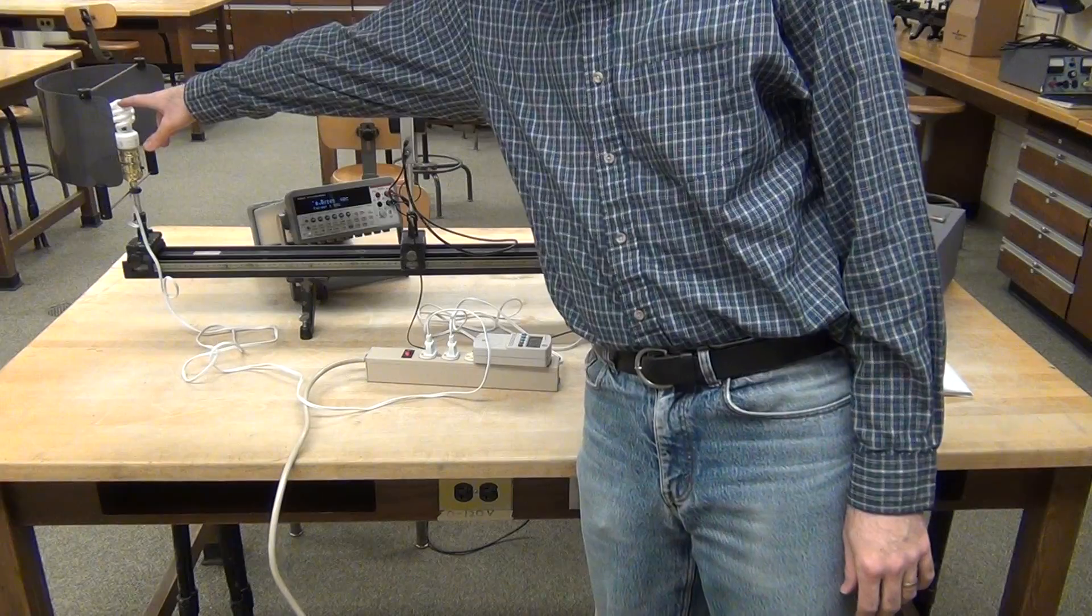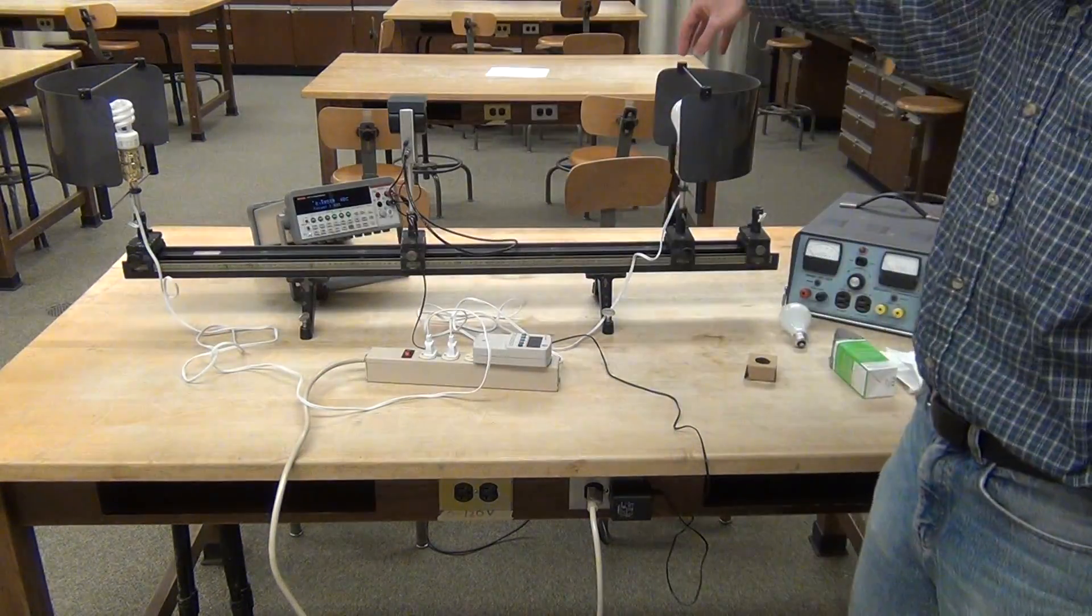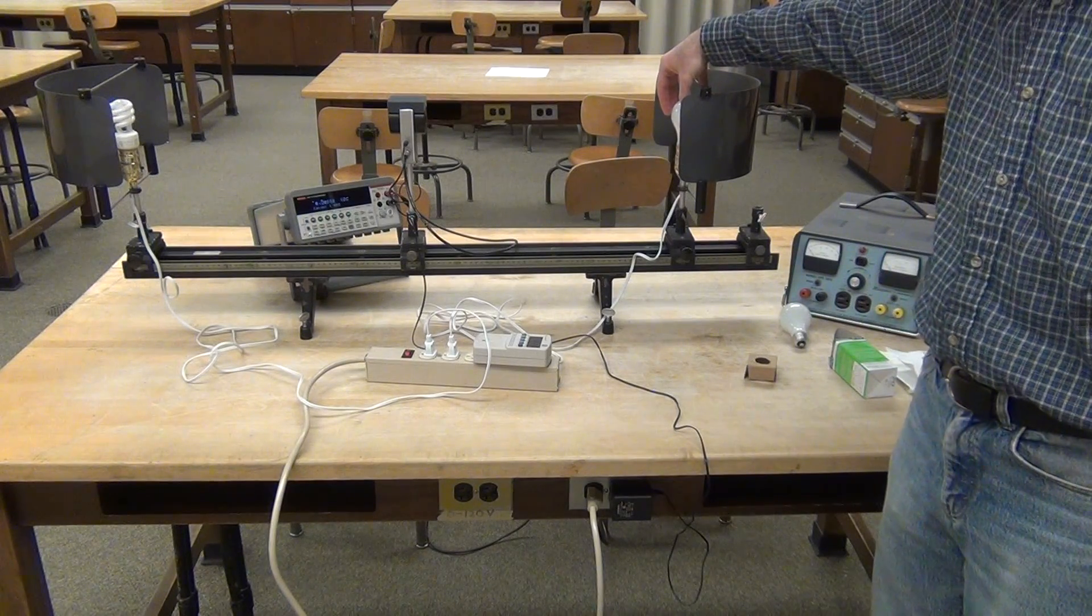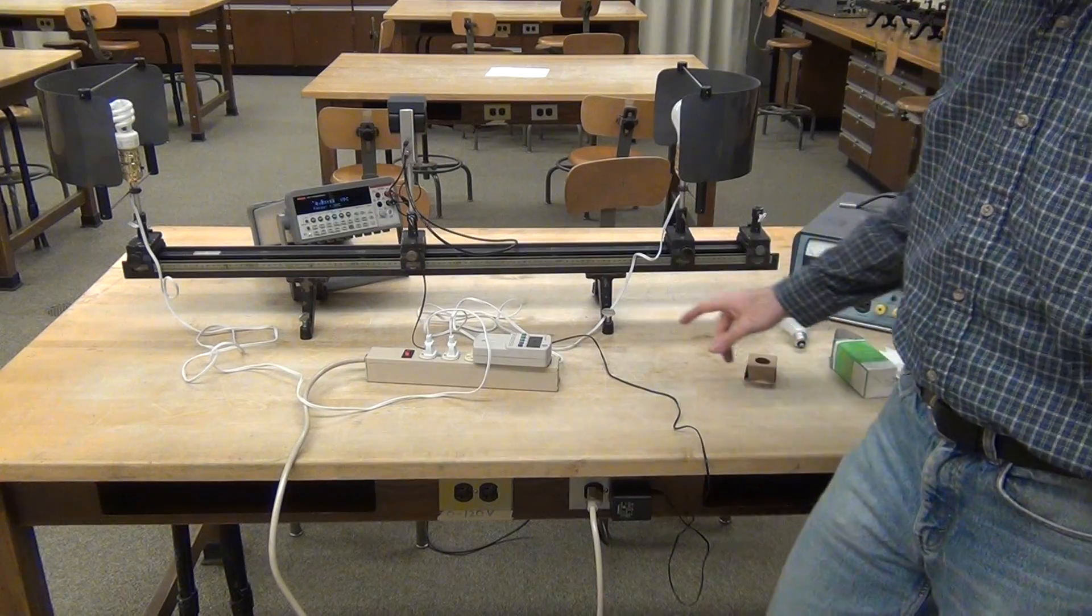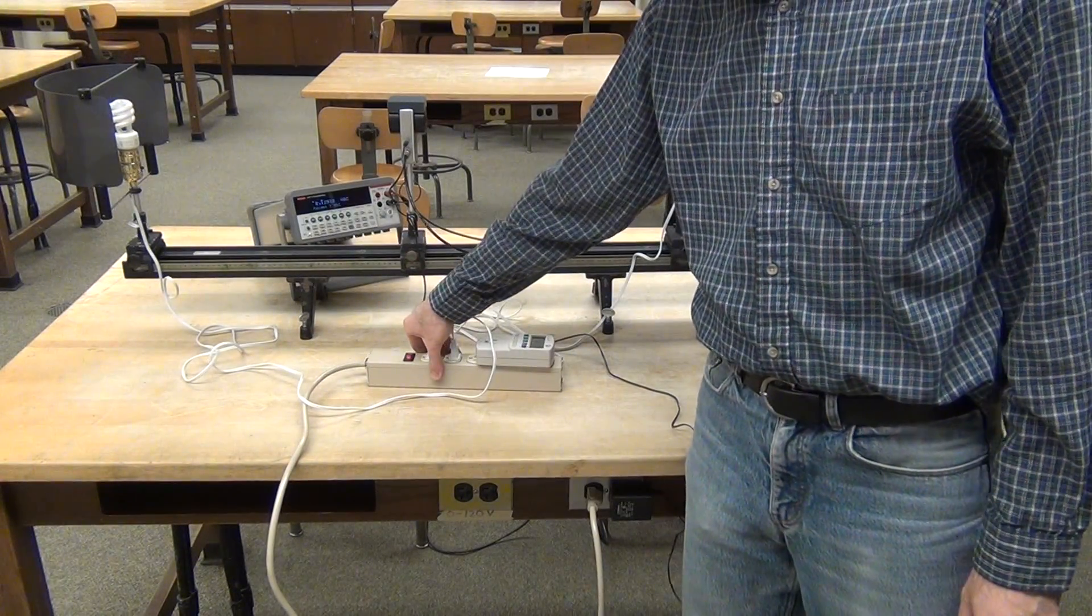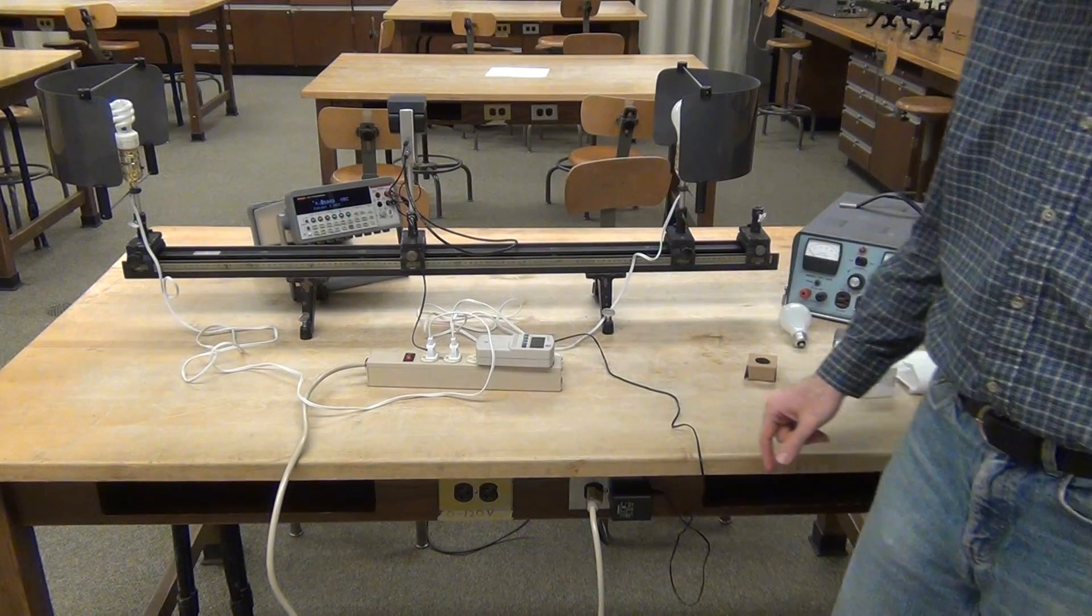I have a CFL bulb plugged in at zero centimeters. I have a 40 watt incandescent bulb at 100 centimeters. Both of those are plugged into a power strip that is plugged into the silver outlet, which is full line voltage.